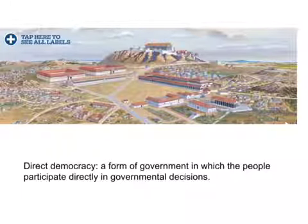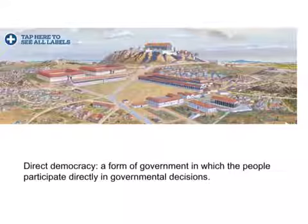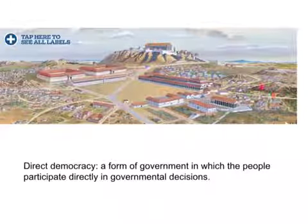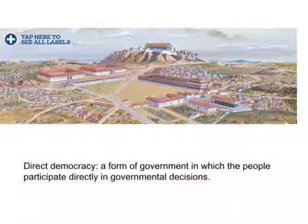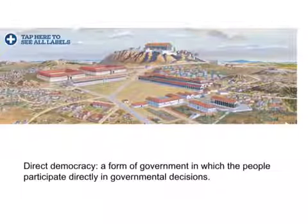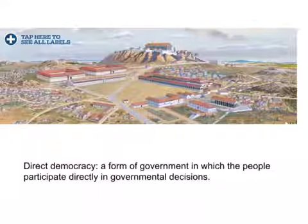Athens had what's called a direct democracy — a form of government in which the people participate directly in governmental decisions. The assembly, which was their government body, would meet on a hill right here in Athens. Thousands of people would gather there, and every citizen had the right to get up and argue for what they wanted and cast a vote on really important decisions — like should we go to war, where should we go to war, who should lead the armies. Literally, a regular person could have a say in what direction the army would head.